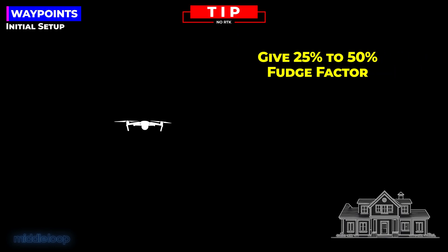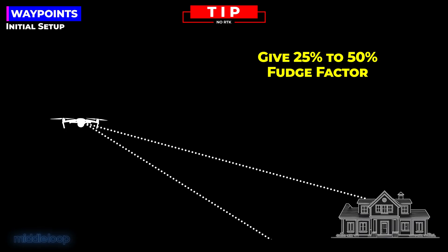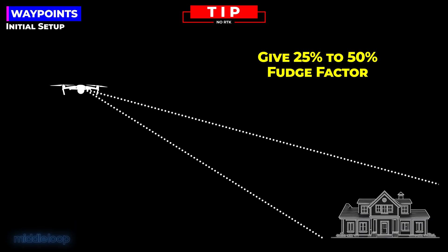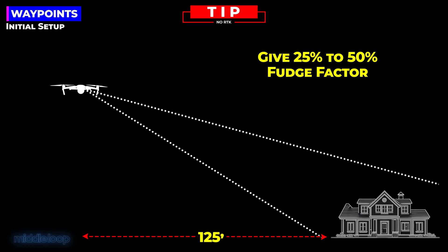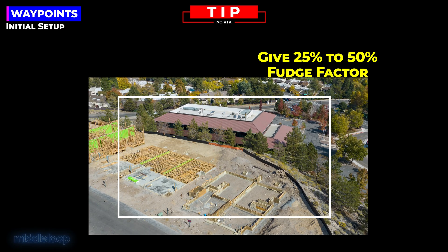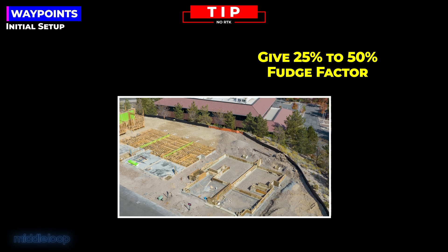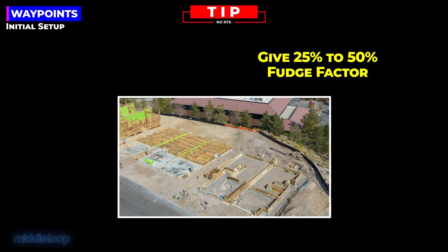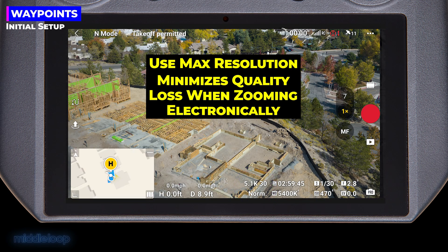RTK can provide accuracy within a centimeter, making post-production much easier. But for those who don't have RTK technology, here's a tip: give your waypoints a 25 to 50% fudge factor. Once you've framed up your shot at each coordinate the way you want it to look, move your drone back from the subject 25 to 50% and raise it up a little, effectively capturing more of the surrounding area around your subject. For example, if the ideal framing is 100 feet from your subject, back it up at least another 25 feet. When producing your final video in part two, you'll electronically zoom in — scaling and cropping the images — to get the framing back to where you want it. We also recommend using your drone's maximum resolution when recording, so that when zooming in electronically during post-production, it'll minimize the deterioration of image quality.